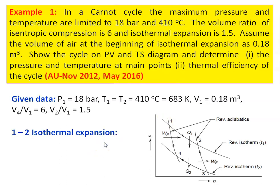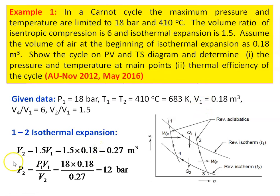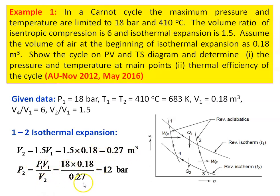We take the first process, 1 to 2 isothermal expansion. For the first process, P1 equal to 18 bar, V1 equal to 0.18 meter cube. We calculate P2 and V2. V2 equal to 1.5 times of V1, because V2 by V1 equal to 1.5. So V2 equal to 1.5 into 0.18 equal to 0.27 meter cube, and P2 equal to P1 V1 divided by V2. The pressure and volume at the beginning for the first process are calculated.